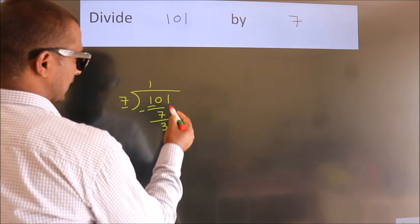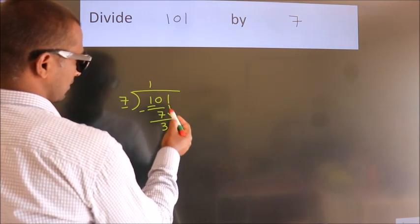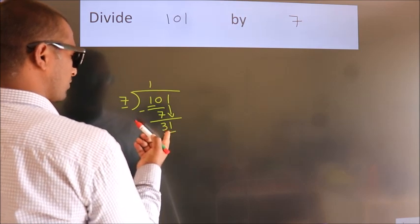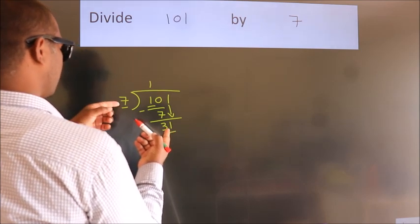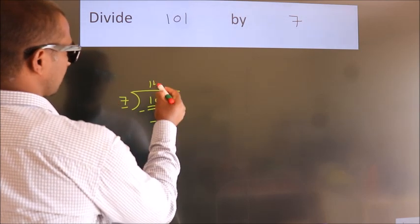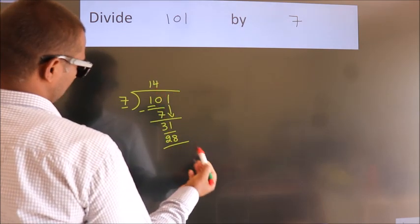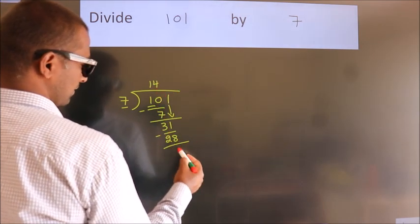After this, bring down the beside number. So, 1 down, giving us 31. A number close to 31 in the 7 table is 7 fours, which is 28. Now we subtract and get 3.